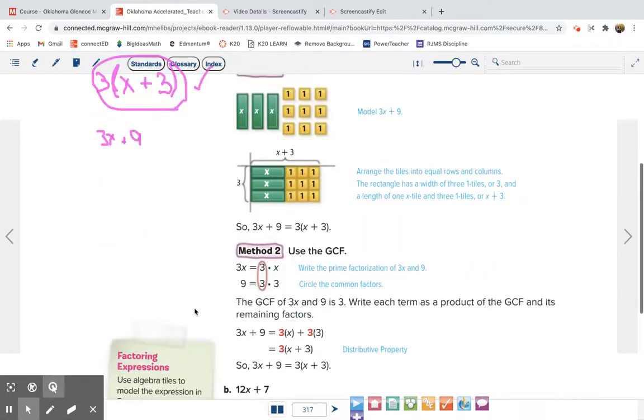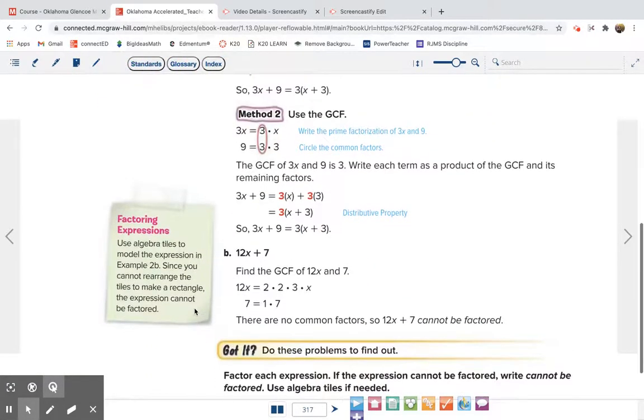Okay, let's look at one more. So b says 12x plus 7. So when we are looking at this, 12 and 7. Okay, well 12 we know is 2 times 2 times 3, because we've already done that, times x. 7 is just 1 times 7. It is a prime number. They have nothing in both of them.